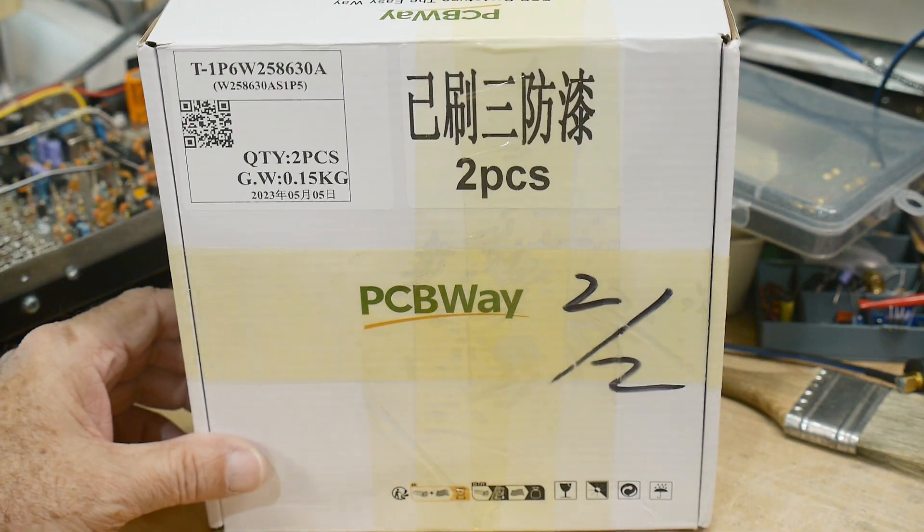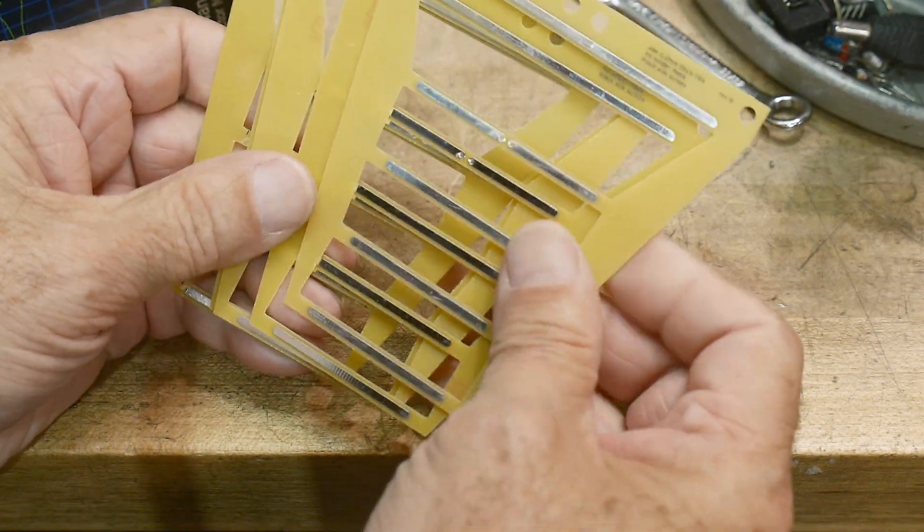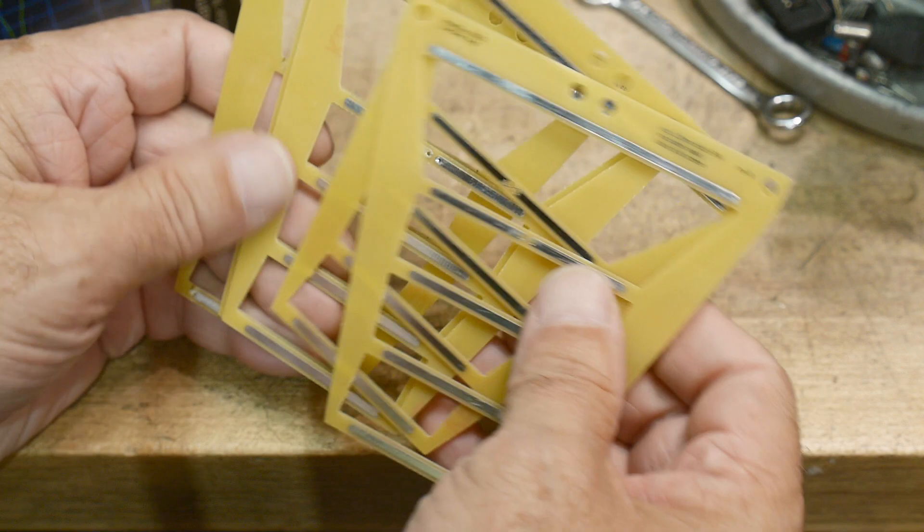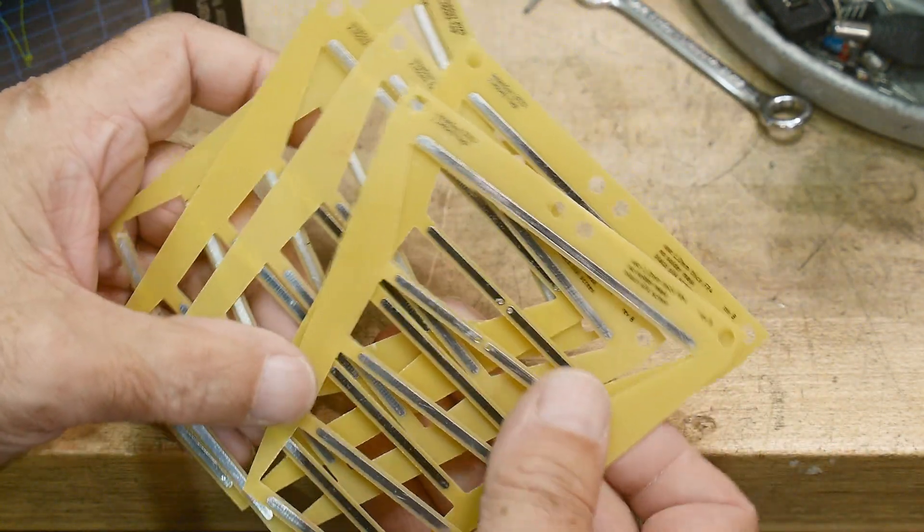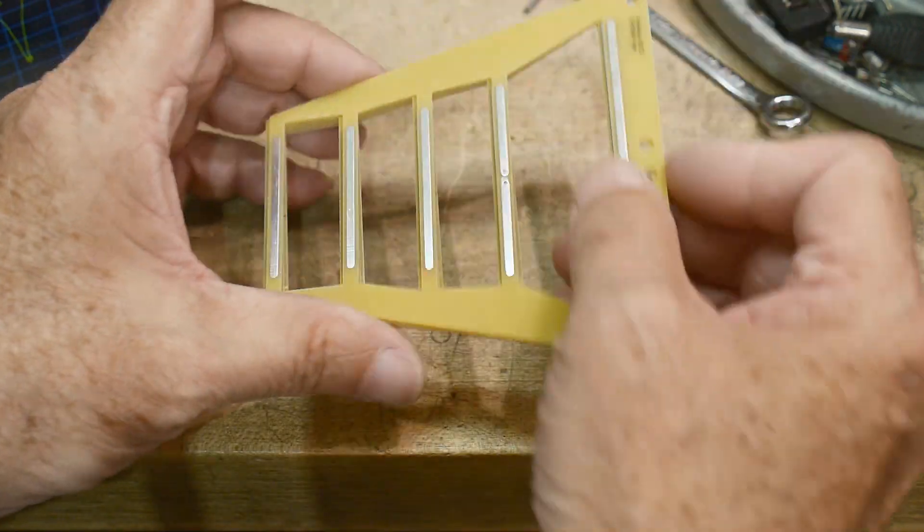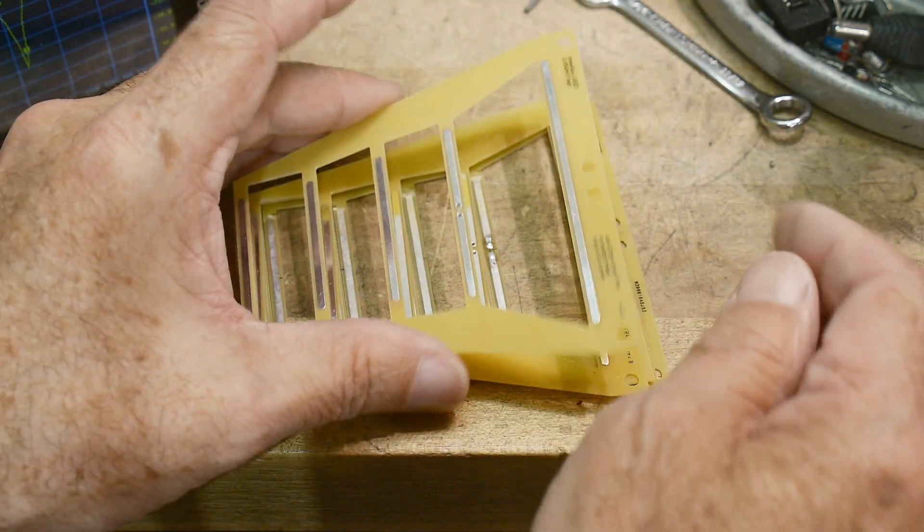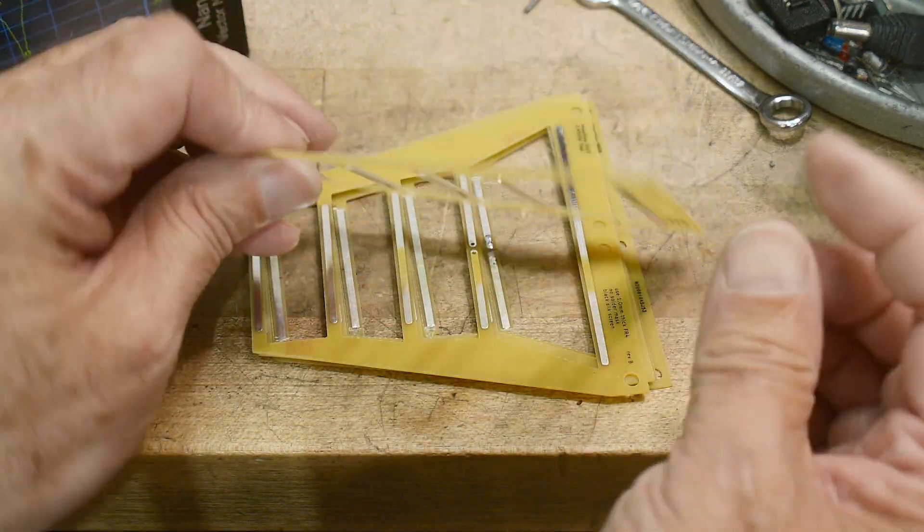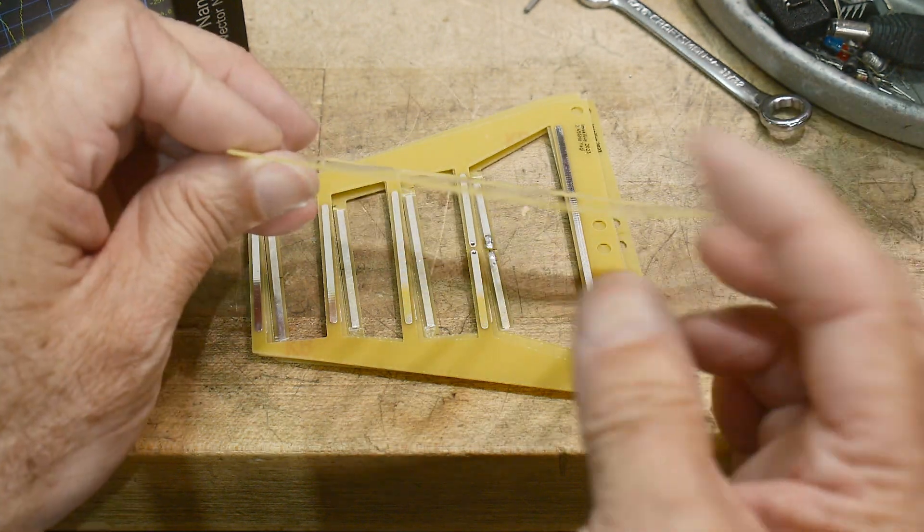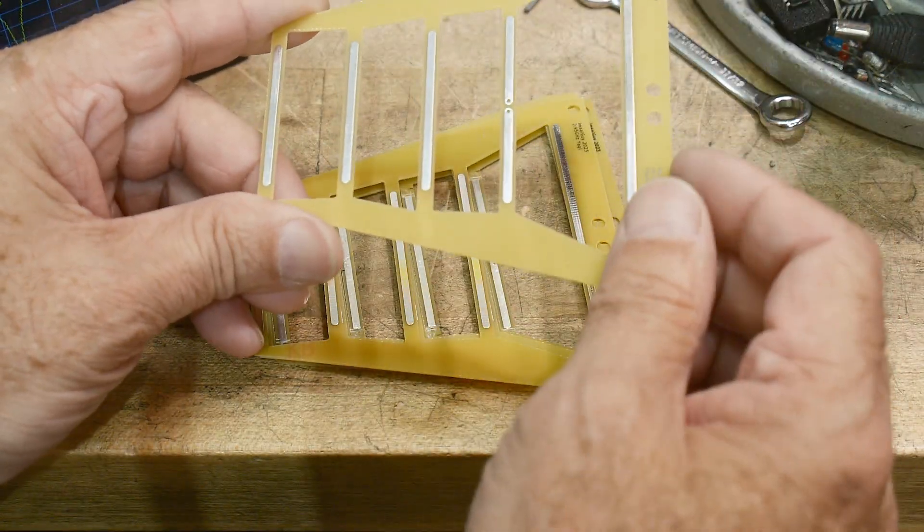All right. Thanks again to PCBWay for supplying PC boards for free. I have the rev B boards back. So these are a little bit different length and these are the final version that I'm going to do. I will put these on my share site on PCBWay. So you can do what you want with these, download them or build them or experiment with them, whatever you want to do. If you do order these boards, make sure that you specify one millimeter thick and specify no solder mask.